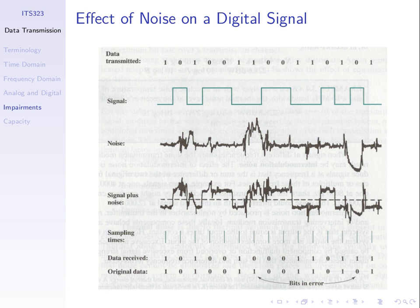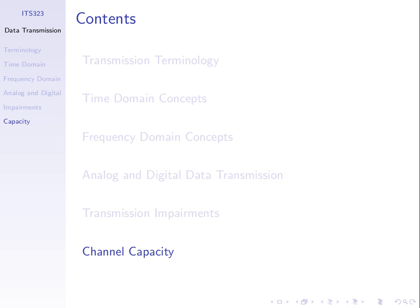To summarize the two main impairments: attenuation — the signal gets weaker across distance, the sine wave amplitude decreases the further the signal propagates; and noise — always present in a system, impacting the received signal quality and the number of errors. The last topic, relating bandwidth and other factors to data rate through specific equations, will be covered in the next lecture.